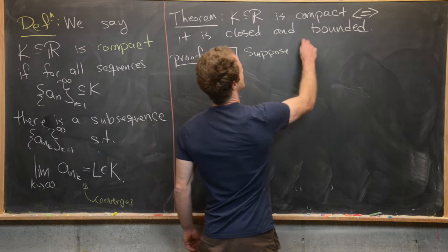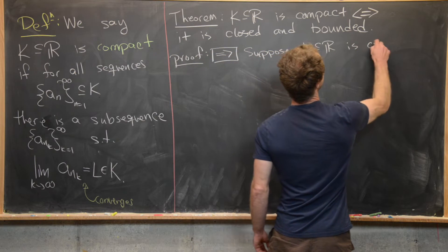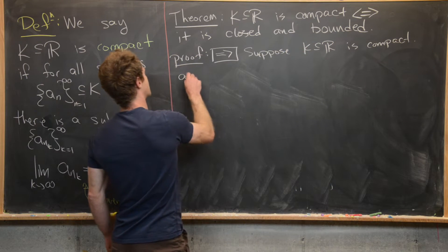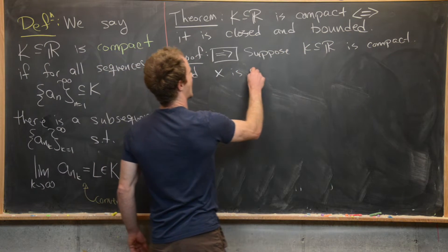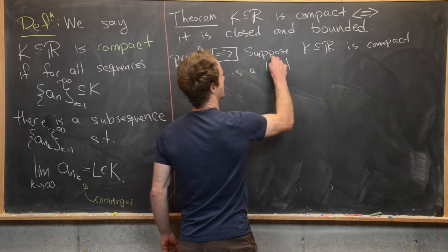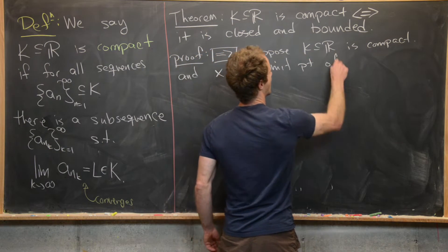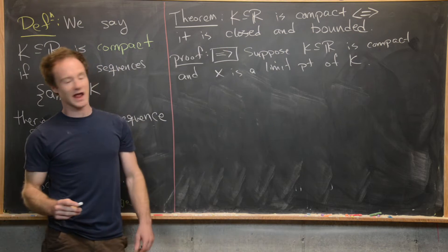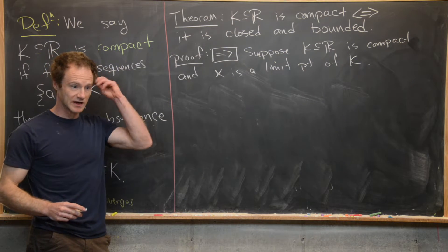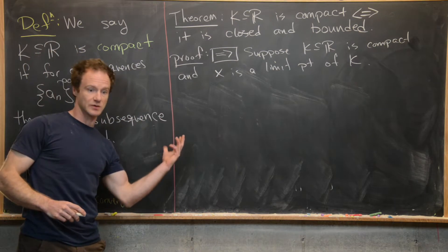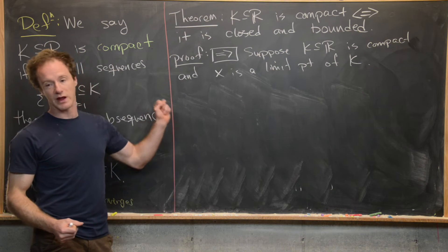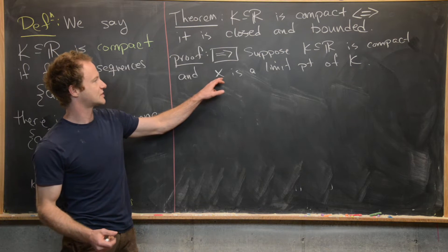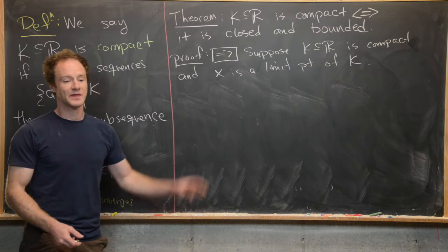We'll suppose K, a subset of ℝ, is compact, and that X is a limit point of K. Our goal is to show that K is closed and bounded. To show it is closed, it must contain all of its limit points, so we started with a limit point from K and now we want to show that this limit point is inside of K.